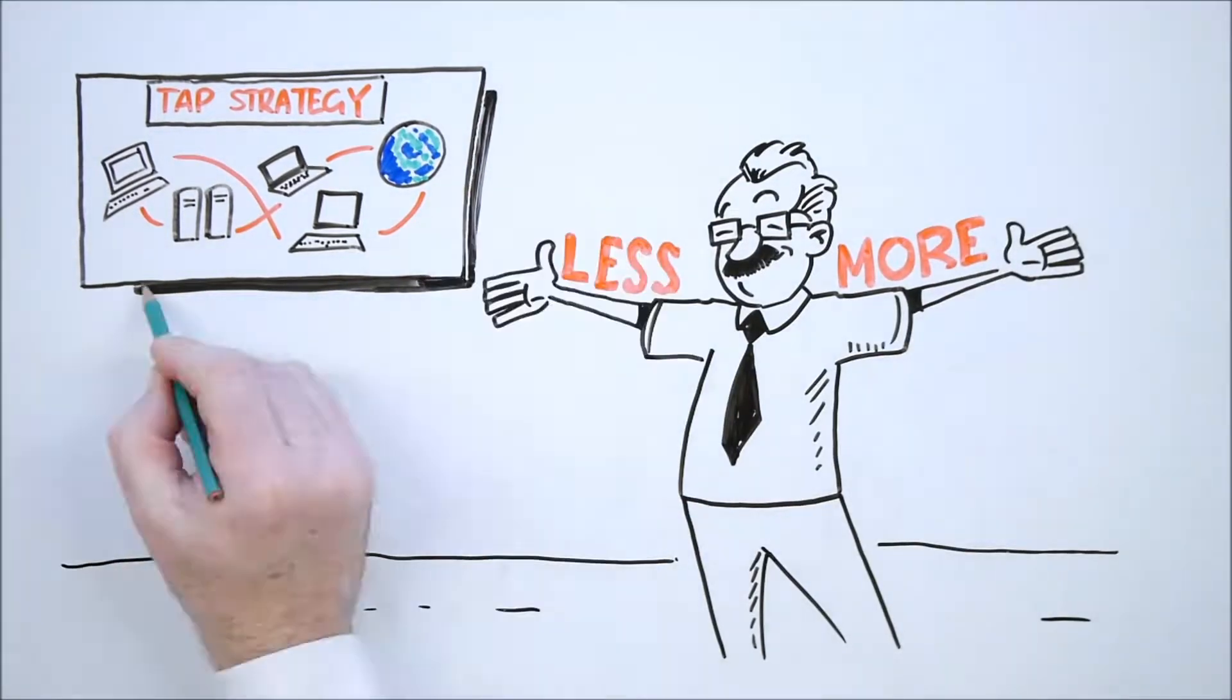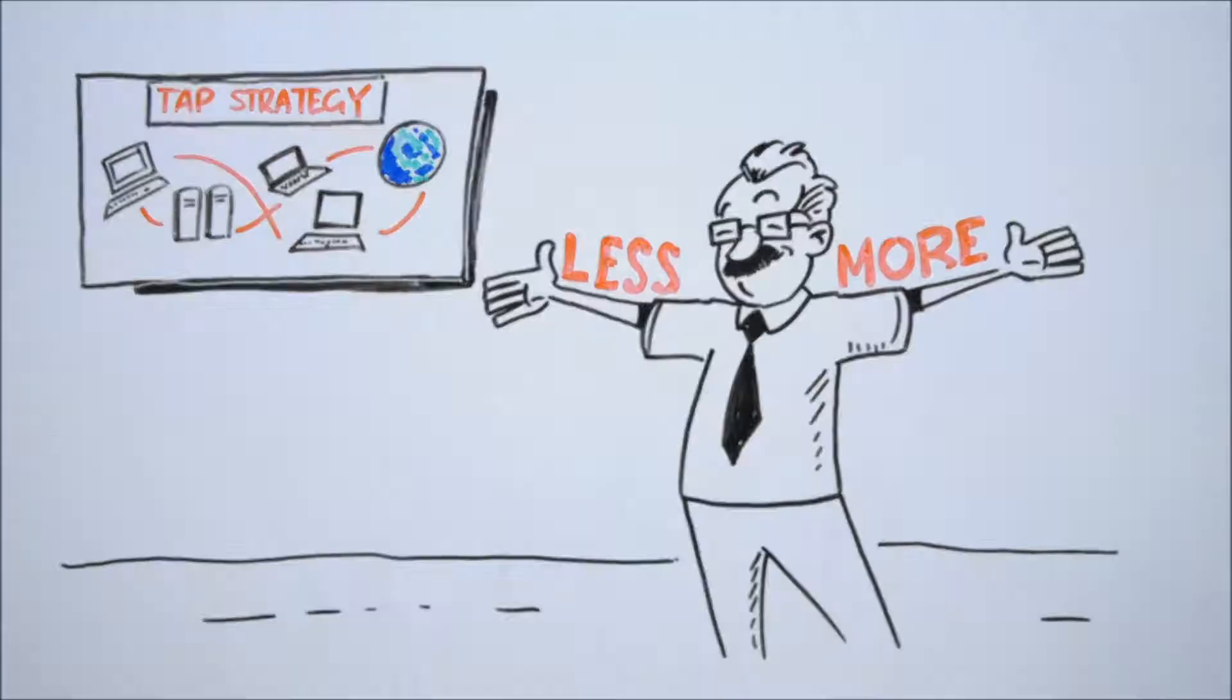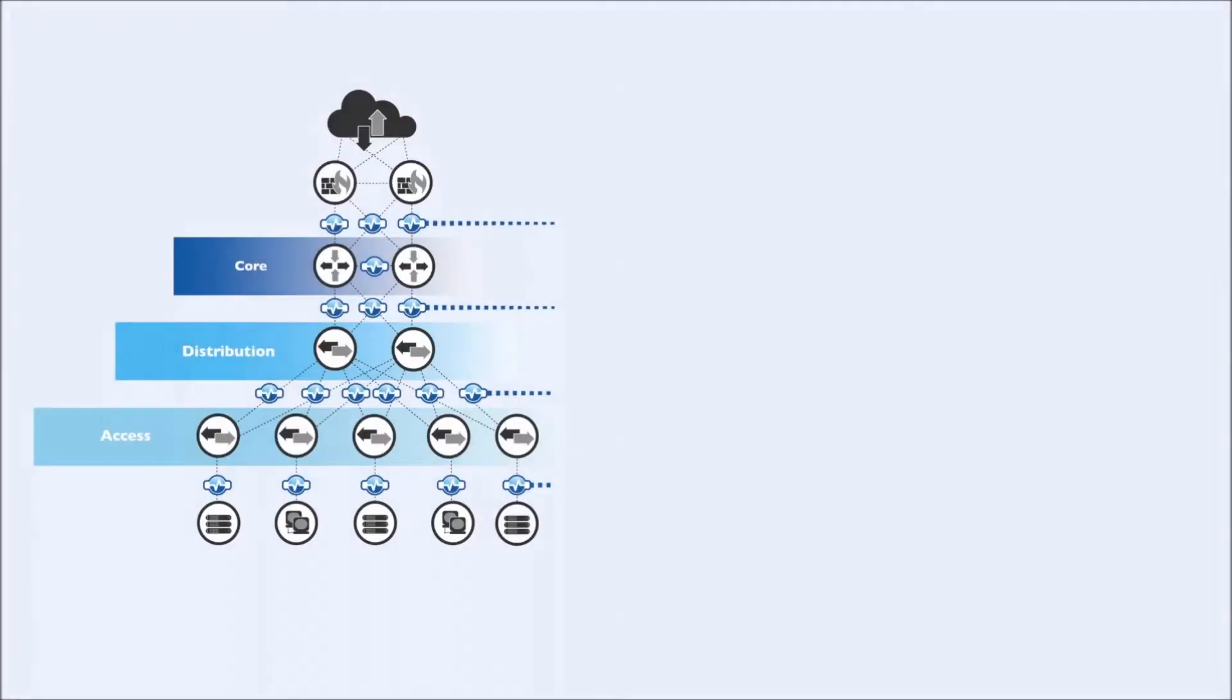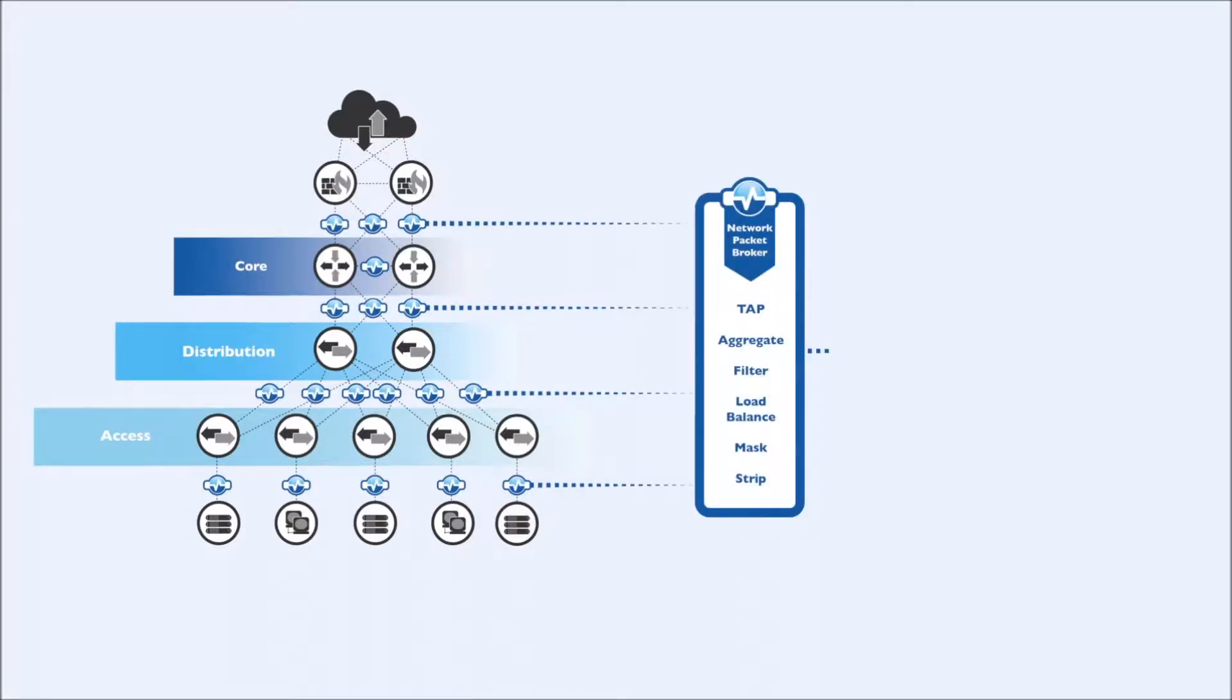This is all down to our TAP strategy. By placing network-critical taps at key locations throughout my network and aggregating all that data through a packet broker, I've been able to optimize the efficiency of every type of monitoring tool we have and still ensure that everybody sees the right data.